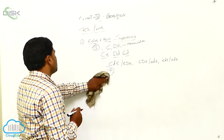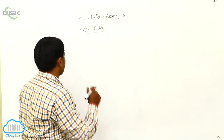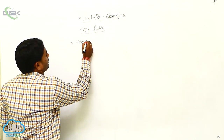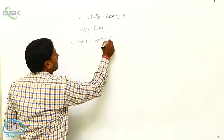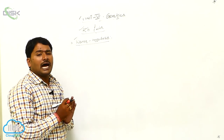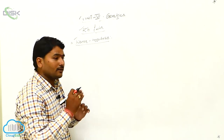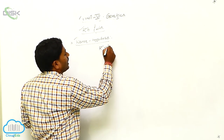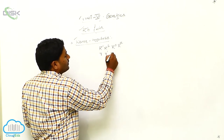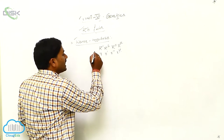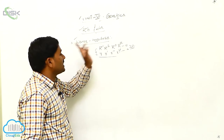There is another hypothesis: the Wiener hypothesis. As per the Wiener hypothesis, there are eight alleles responsible for the RH antigen production: R1, R2, R0, RZ, R, R1, R2, and RY. These eight alleles are responsible for the RH factor.